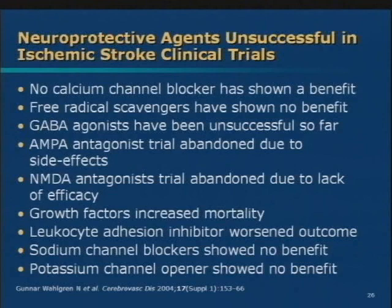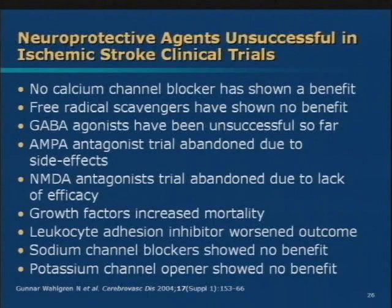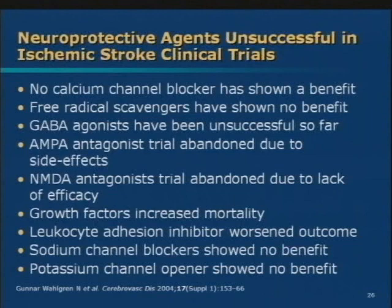Unfortunately, in the area of stroke to date we don't really have proven, robust, useful neuroprotective agents that are good enough that we use them all the time. This is a partial list of things that have been tried: calcium channel blockers, agents to get rid of free radicals, various receptor antagonists to interrupt cascades that lead to irreversible injury and cell death, growth factors, and things to reduce the inflammatory response. In stroke, most of these have been disappointing and have not helped very much.